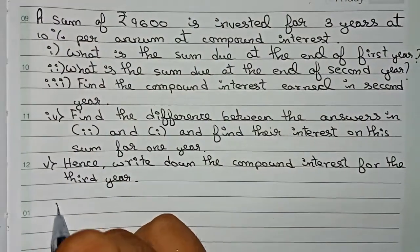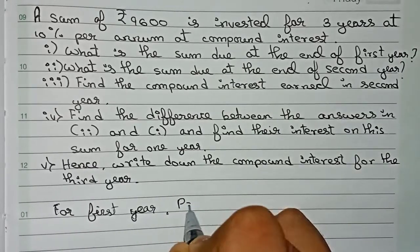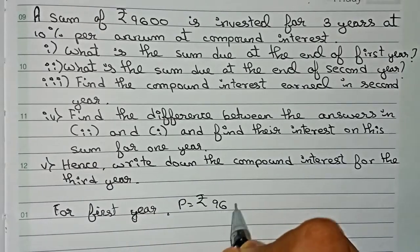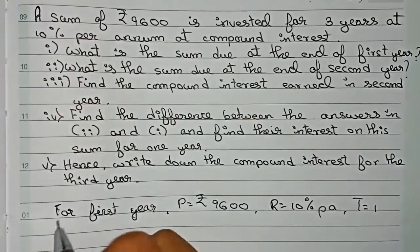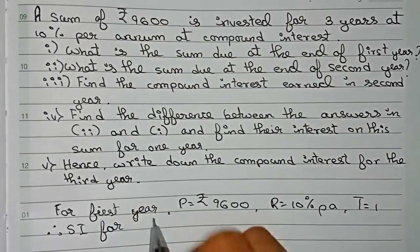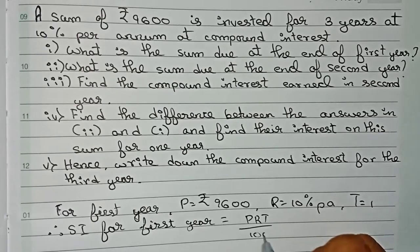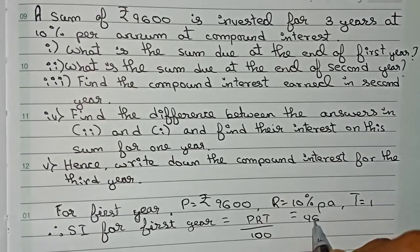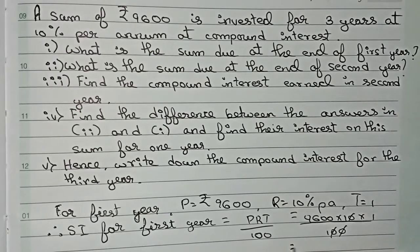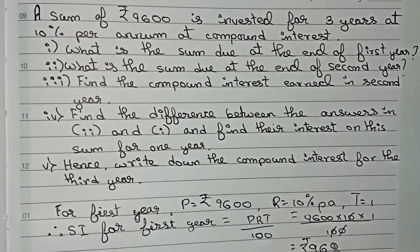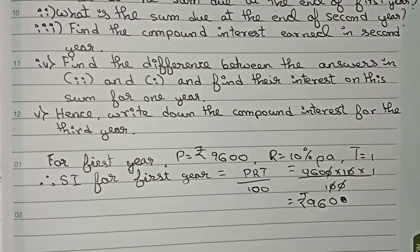For the first year, the principal is ₹9,600, rate of interest is 10% per annum, and time is one year. Therefore, SI for the first year using the formula PRT by 100 — principal into rate into time divided by 100 — gives us 9600 × 10 × 1 ÷ 100. Cutting the zeros, this equals ₹960, which is the interest for the first year.